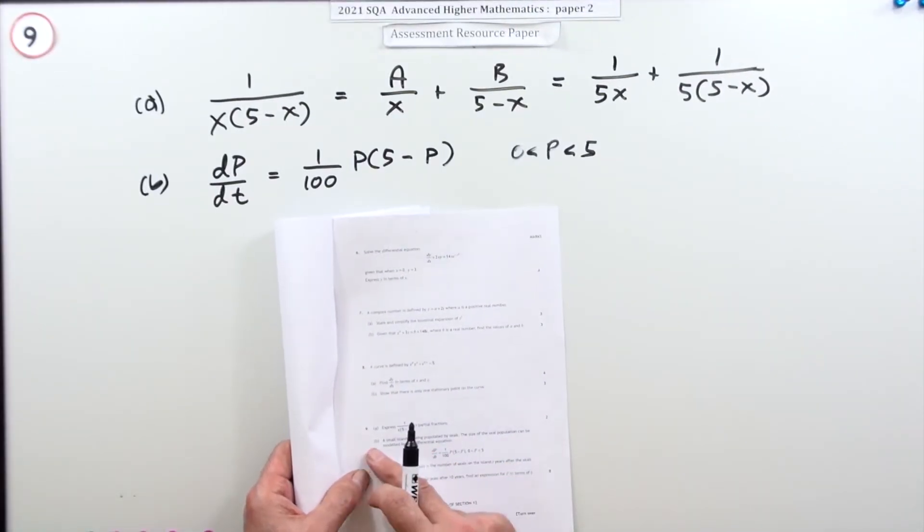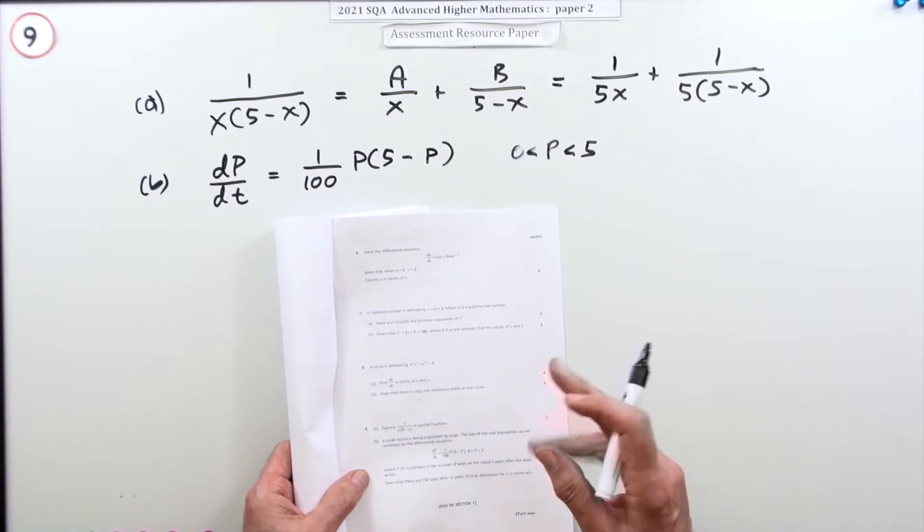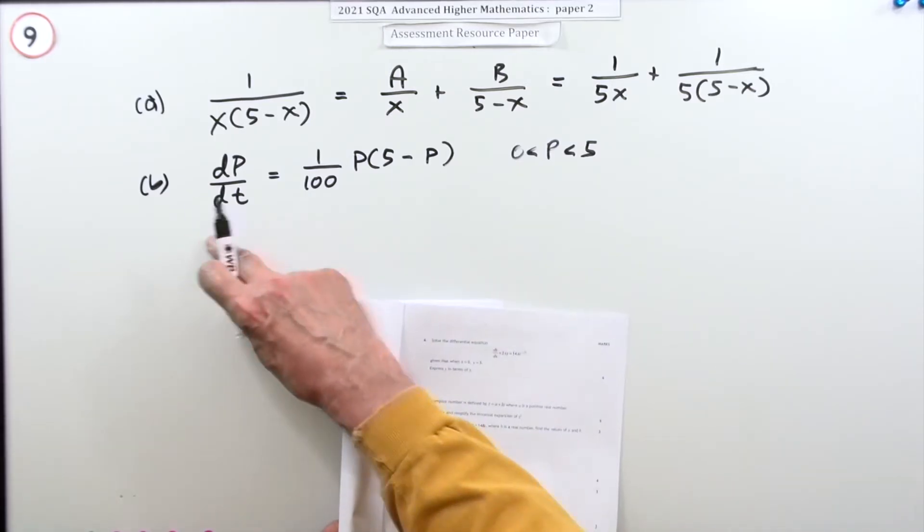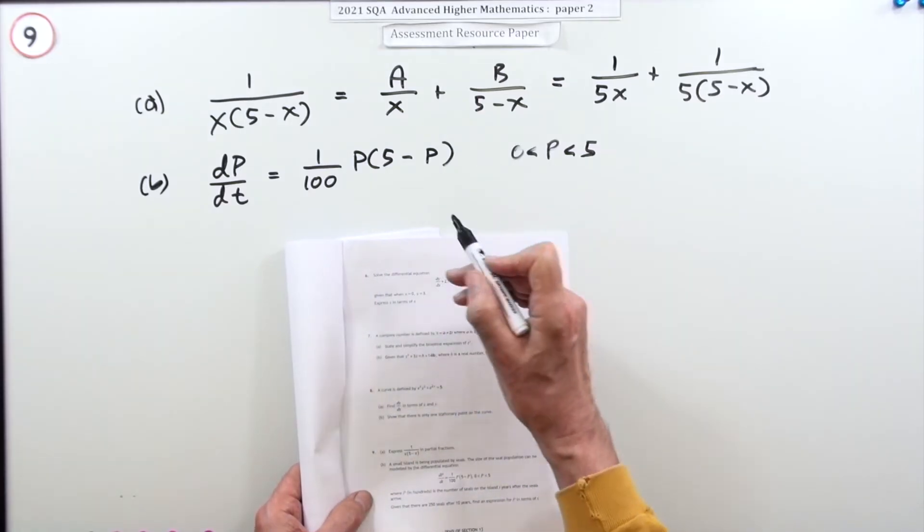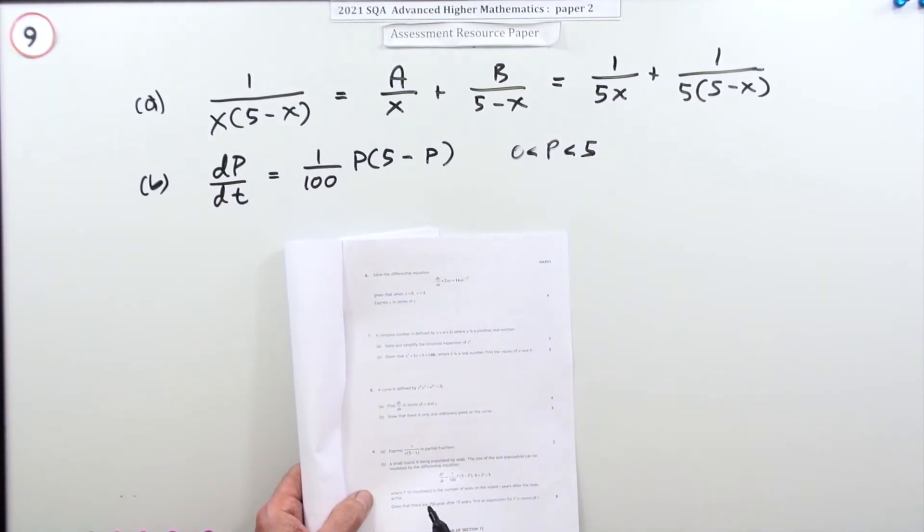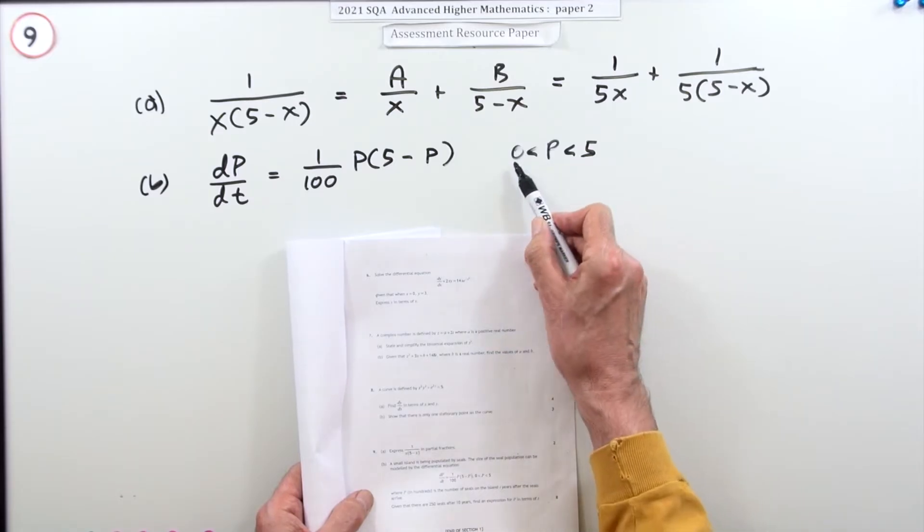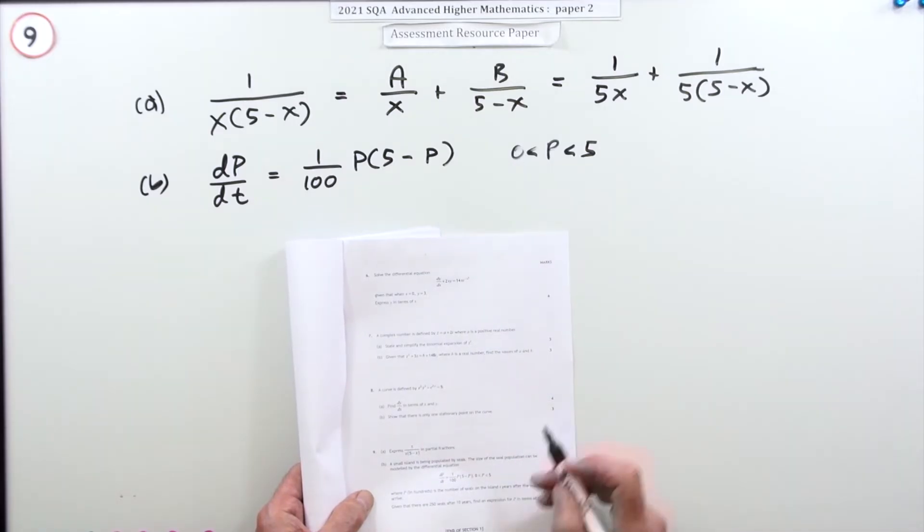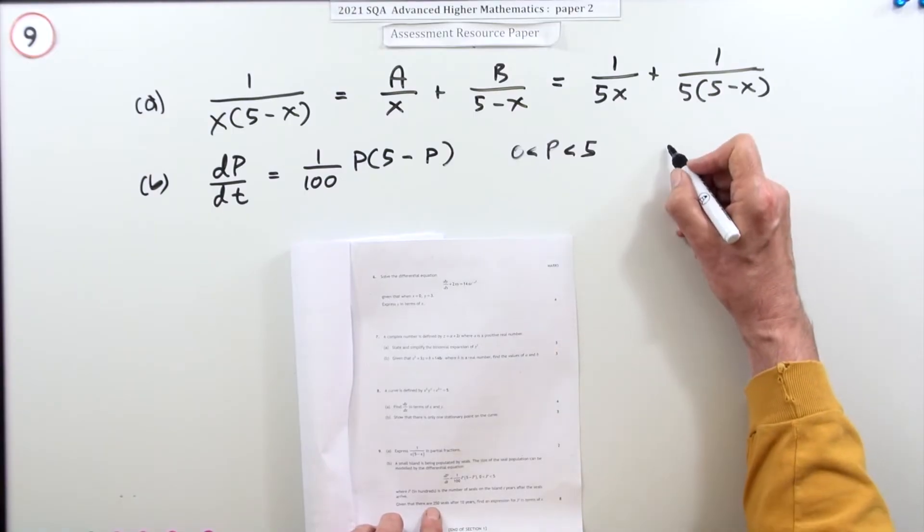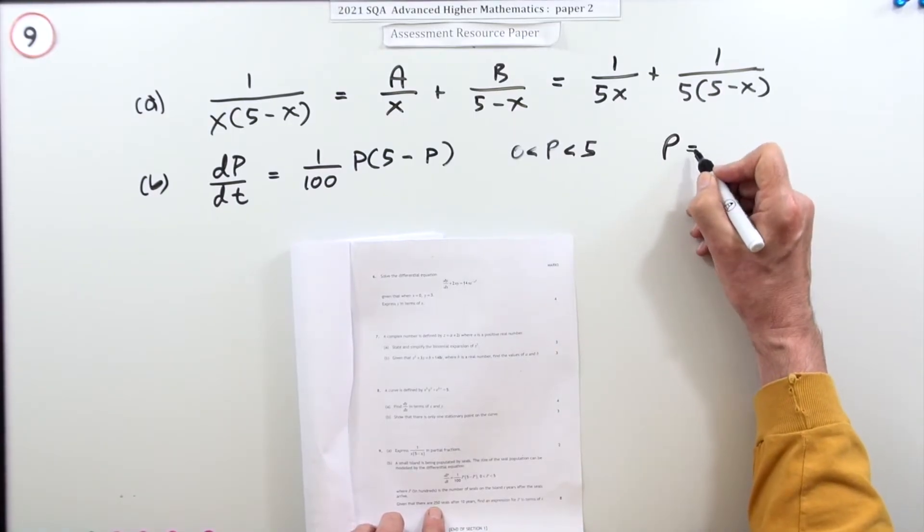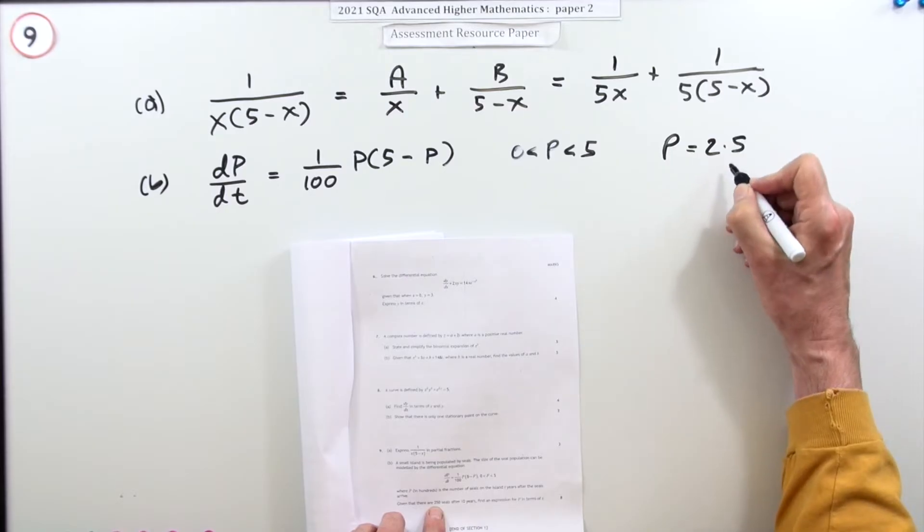Now in part b, what does it say? A small island has been populated by seals. The size of the population is modeled by this differential equation here, and it tells you that P, the size of the population, is in hundreds, it's the number of hundreds, and it's between zero and five. It gives you a pair of conditions here: it says that the population is 250, now that's 2.5 because it's the number of hundreds, when t is 10.